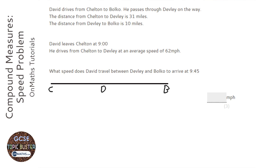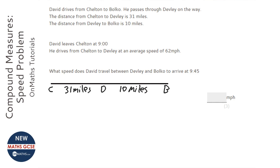I'm just going to put the information on. There's 31 miles here and there's 10 miles here. And there's an average speed of 62 miles per hour.